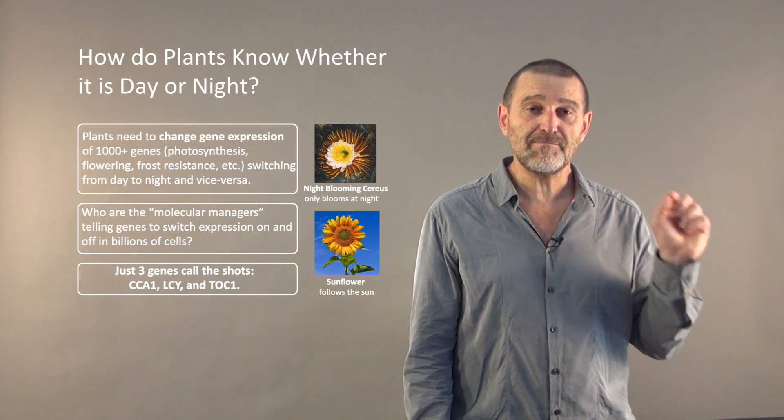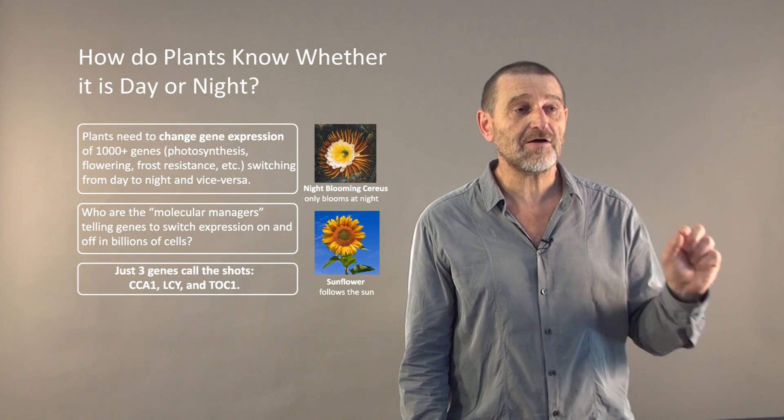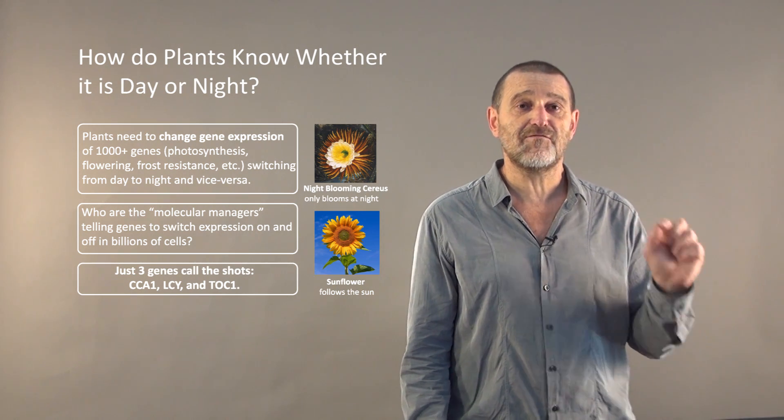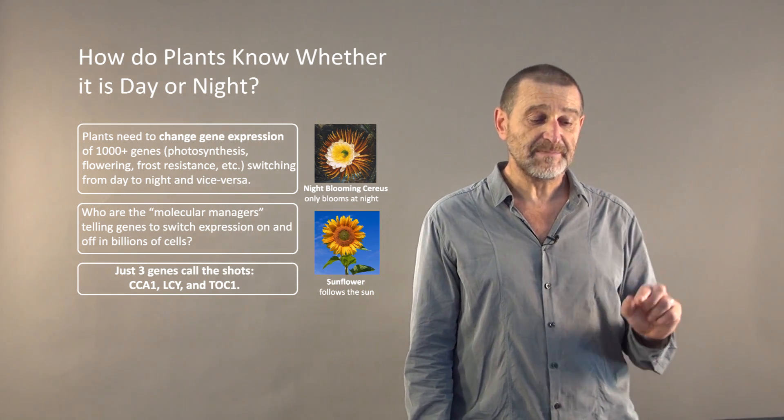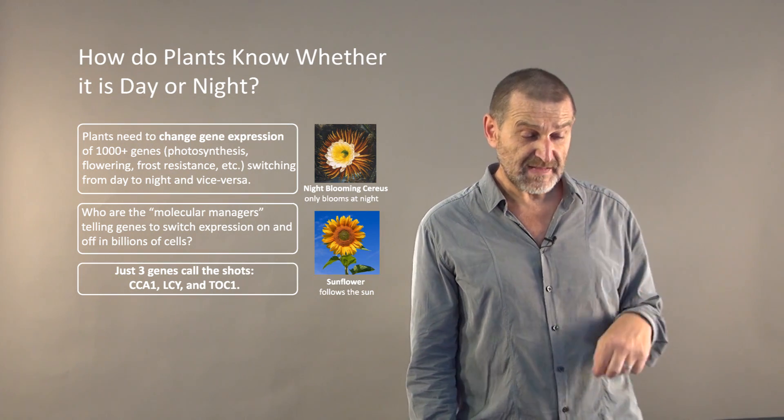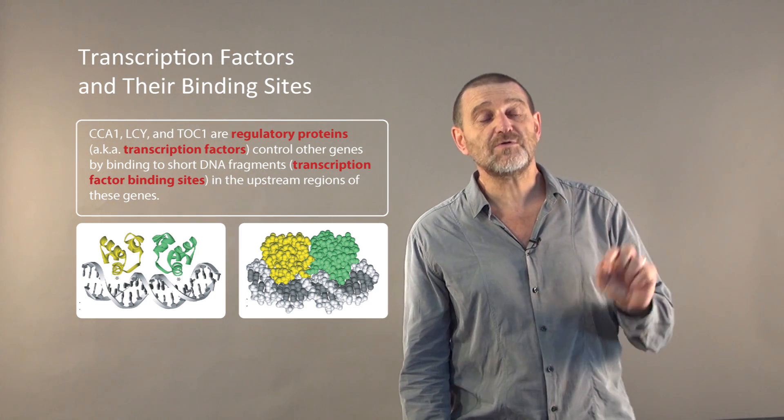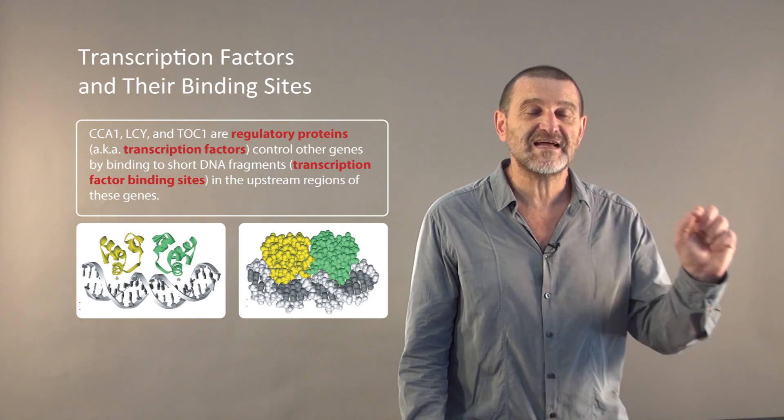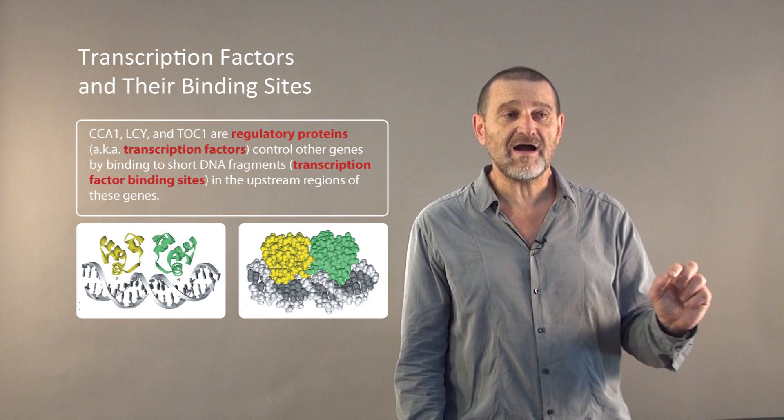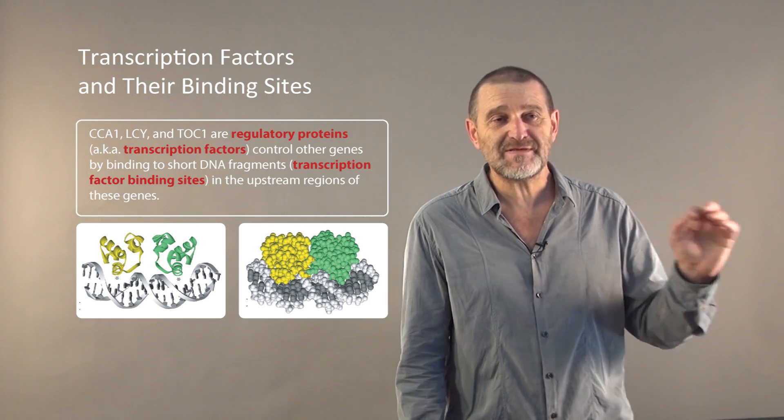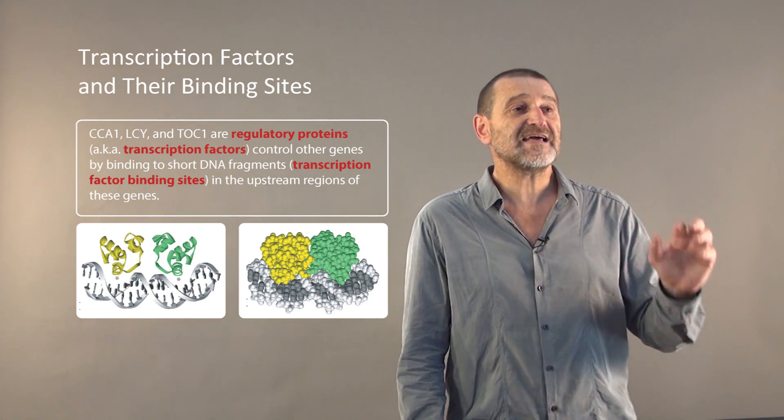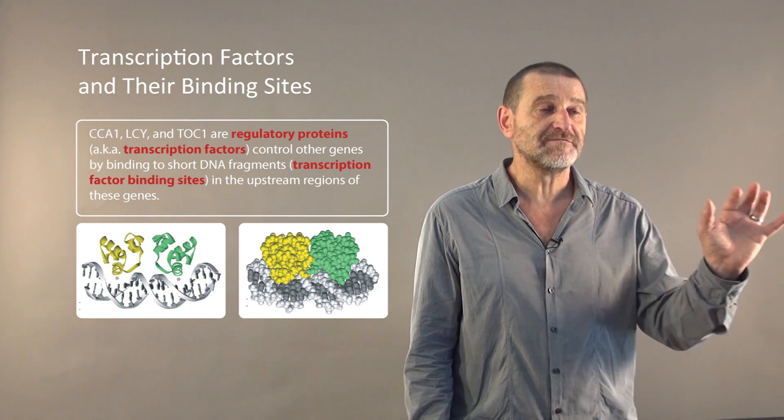Here comes a surprise. Just three genes in plants are molecular managers that are responsible for orchestrating this circadian behavior. They are called CCA1, LCY, and TOC1. These genes are regulatory proteins, also known as transcription factors. These genes, to control other genes and exert control over circadian clock, they bind to short regions, maybe 10 nucleotides, 15 nucleotides, in the upstream regions of the genes.